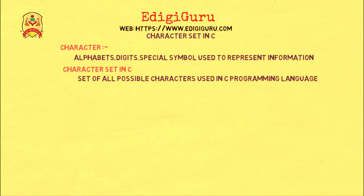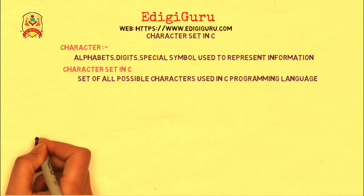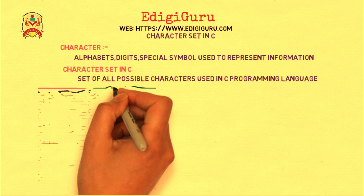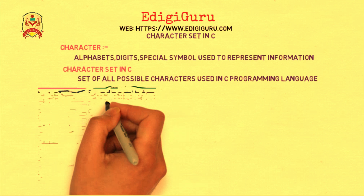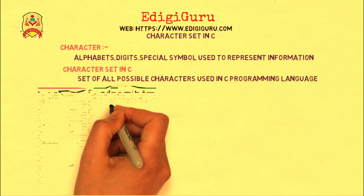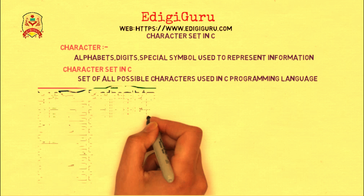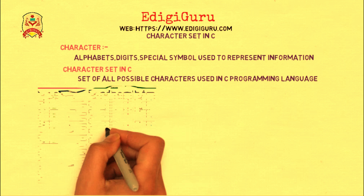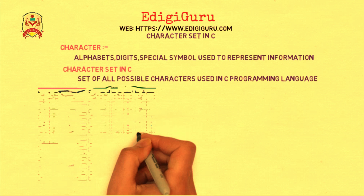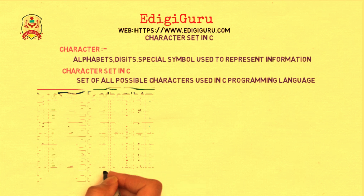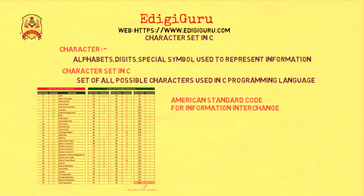All the characters which are present in ASCII codes could be used in a C language. ASCII stands for American Standard Code for Information Interchange.